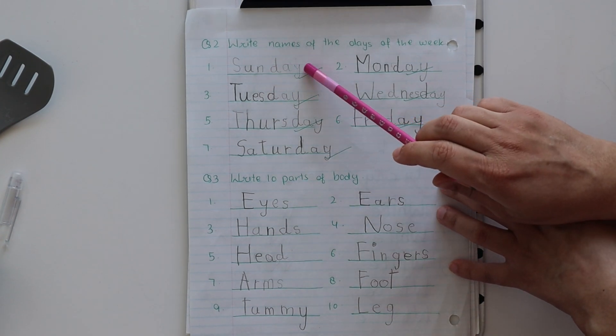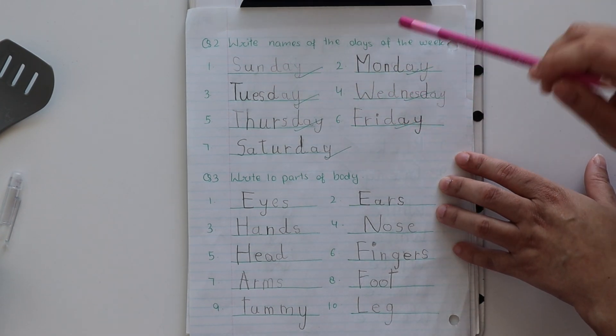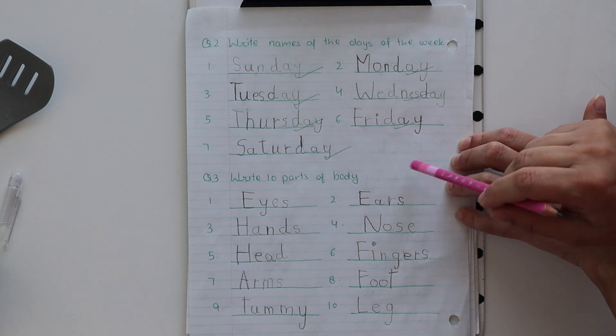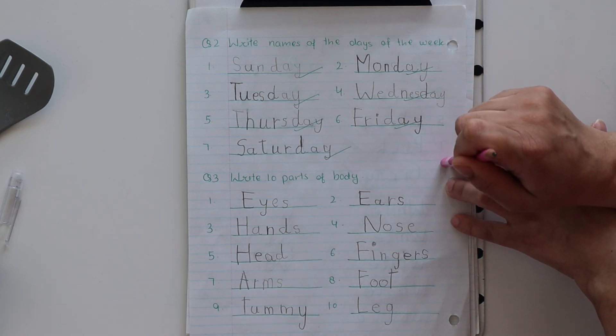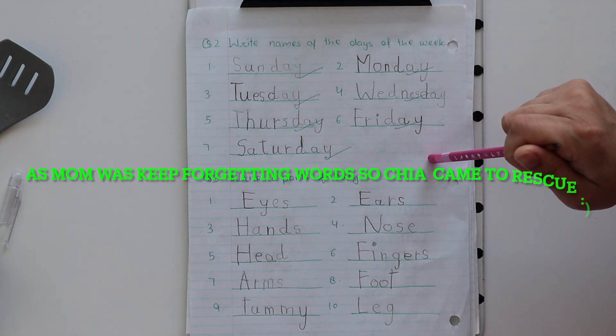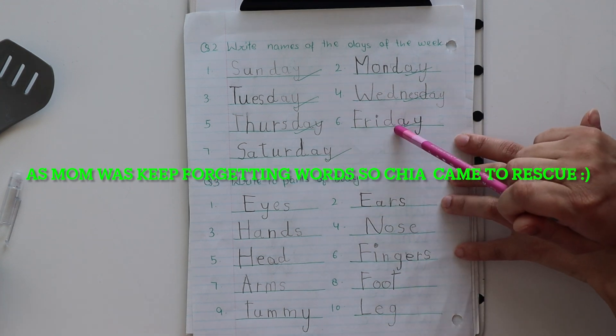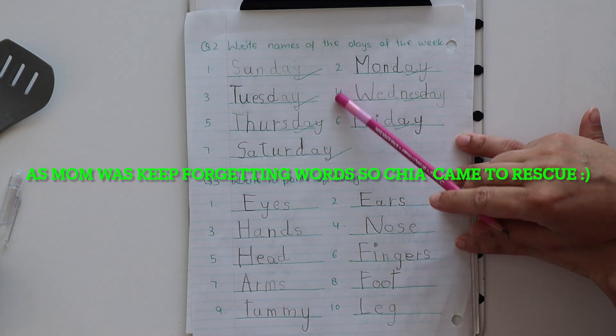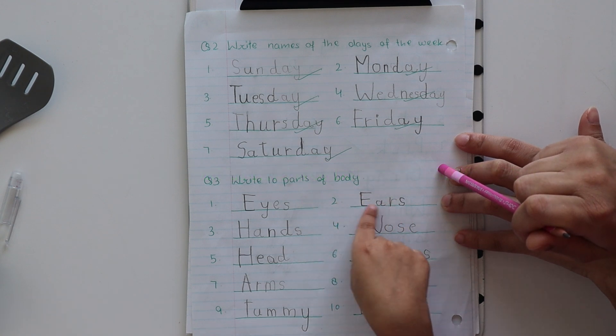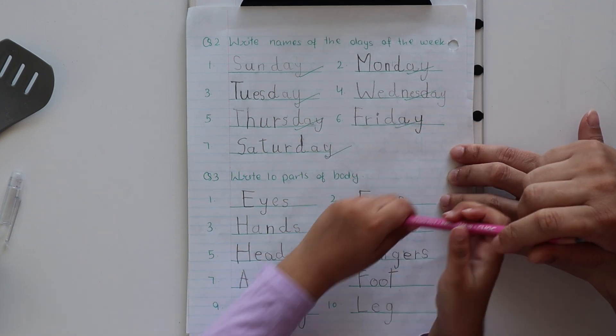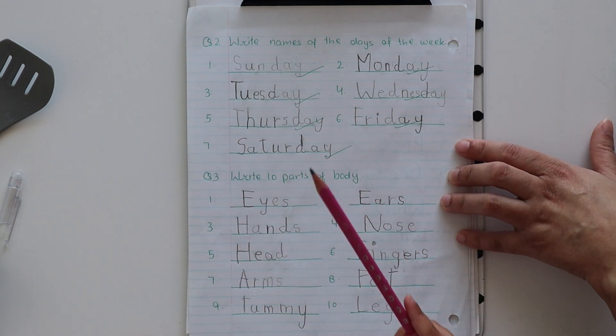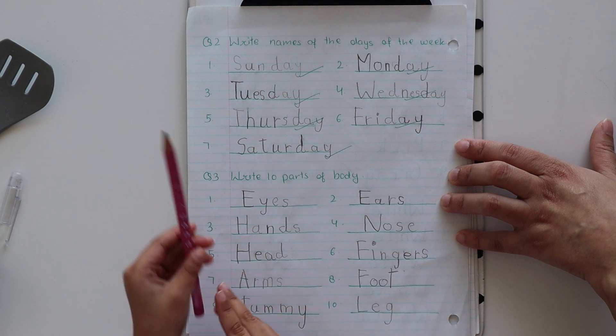Next I asked her to write the names of the days of the week. My mom is forgetting few words. Yeah, I am forgetting few words and Chia is reminding me that. Thanks love. So next what I have done here, you see that I have done, my mom told me to write names of the days of the week. So you see that I wrote Sunday, Monday, Tuesday, Wednesday, Thursday, Friday, Saturday. So these are the days of the week.